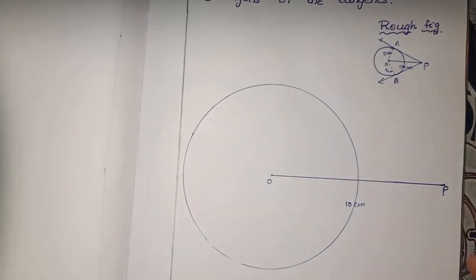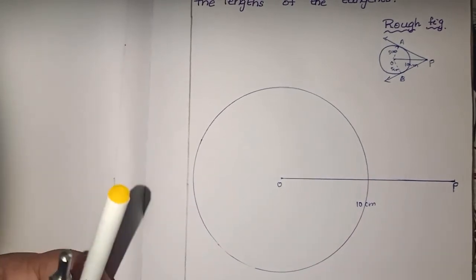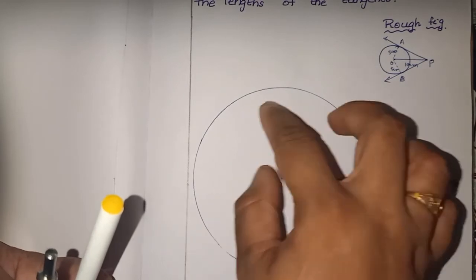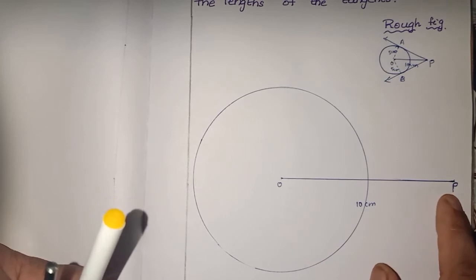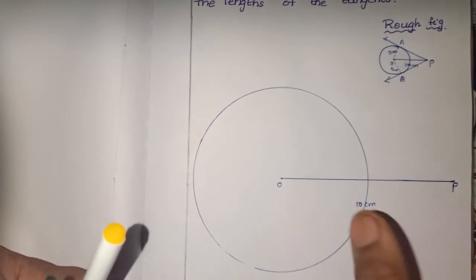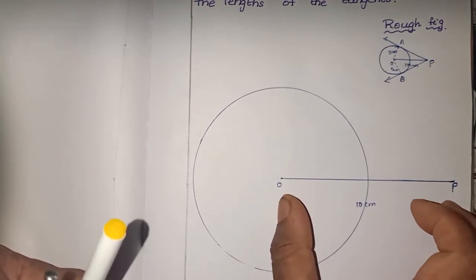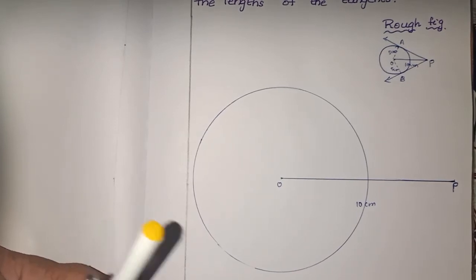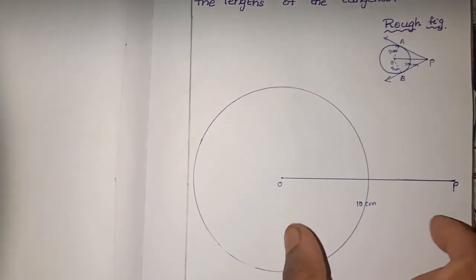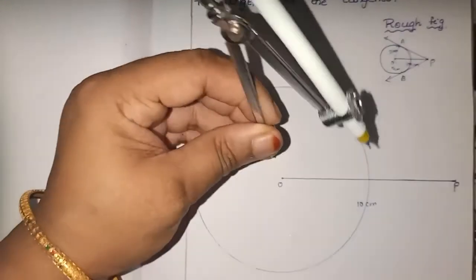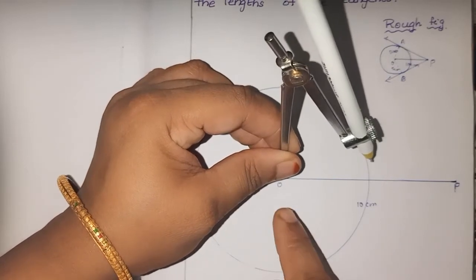Next step: for the line segment OP, you have to construct the perpendicular bisector. The first step was to draw the circle with radius 5 cm. Second step: the external point is 10 cm from the center of the circle. The OP line segment is 10 cm, and you have to construct the perpendicular bisector. Taking more than half, this is the line segment OP. Place the tip of the compass here and construct more than half.